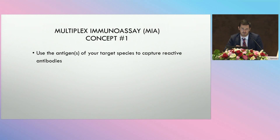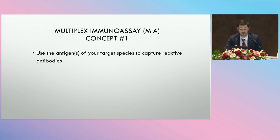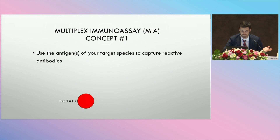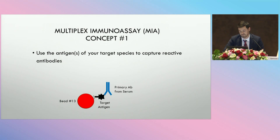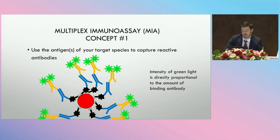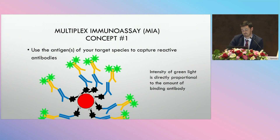I'll walk through the three concepts we use when developing our home-brewed assays. First, you want to use antigens of your target species that capture reactive antibodies. You conjugate your target antigen to the bead, incubate with a primary antibody, and detect with a secondary antibody. There are multiple copies of the same protein coupled to each bead, and the intensity of the green light signal is directly proportional to the amount of antibody bound to that protein.